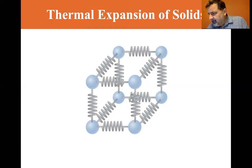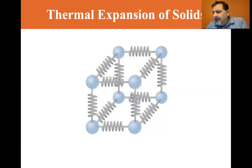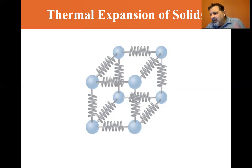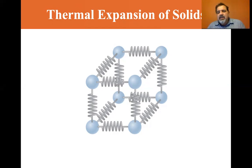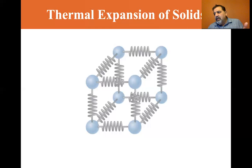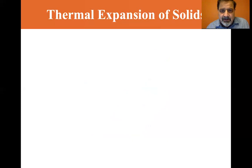The model treats atoms as being connected by stiff springs. At ordinary temperatures, atoms in solids oscillate about their equilibrium position with an amplitude of approximately 10⁻¹¹ meters and a frequency of about 10¹³ Hz. The average spacing between atoms is about 10⁻¹⁰ meters. As the temperature of the solid increases, atoms oscillate with greater amplitudes and the average separation between them increases, and the object expands.